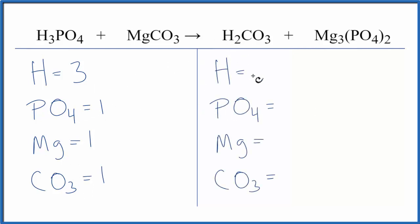we have two hydrogen atoms. Phosphate ions, we have two, these two here. Magnesium we have three, and carbonate we have one.